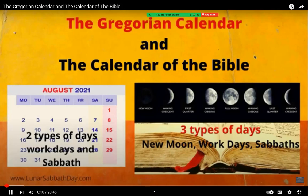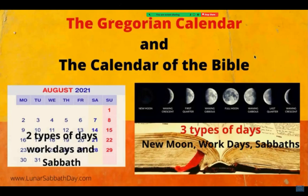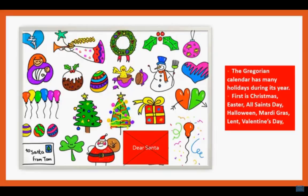Thank you for listening to our YouTube channel. Today I am your host Barbara, and Brother Pete is the co-host. Our topic today is the Gregorian calendar and the calendar of the Bible and how they differ. The Gregorian calendar has many holidays during each year: Christmas, Easter, All Saints Day, Halloween, Mardi Gras, Lent, Valentine's Day — you've heard of them all, and they're on that calendar that hangs on your wall.